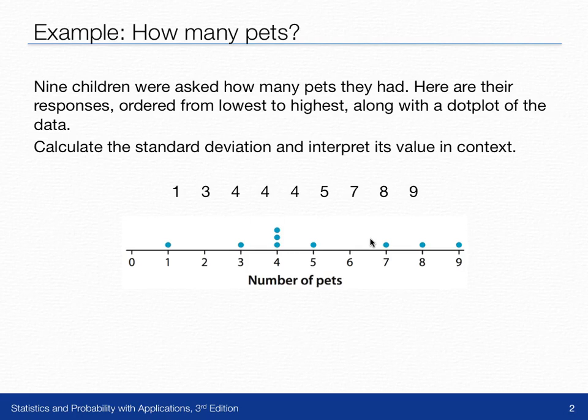We're going to calculate and interpret the standard deviation in the context of the problem. One child had just one pet, and one child had nine pets. That's a lot.